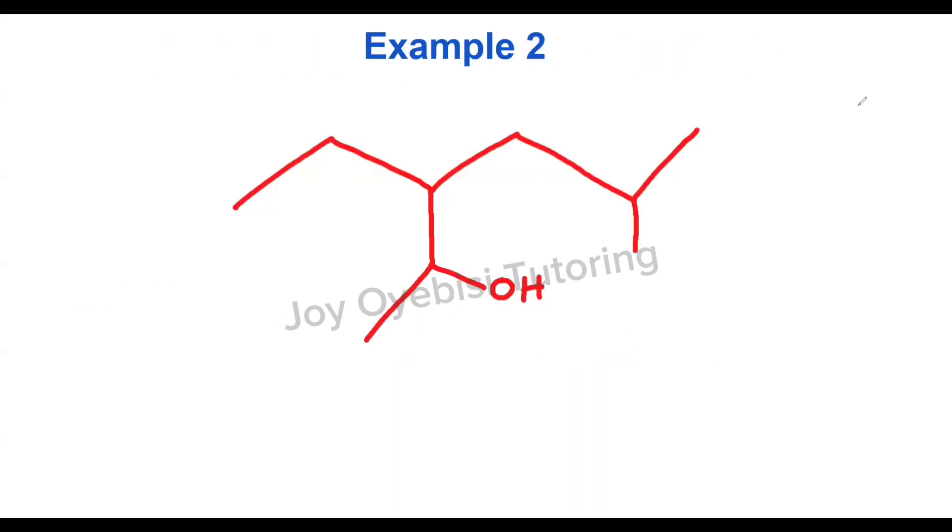This is the second example. The first thing you will do is to identify your longest continuous chain, making sure that the OH group is included in the longest continuous chain. Secondly, number from the side that is closest to the OH. So if I'm looking at this, this side is closer to the OH than the other side. So I'm going to count from here.